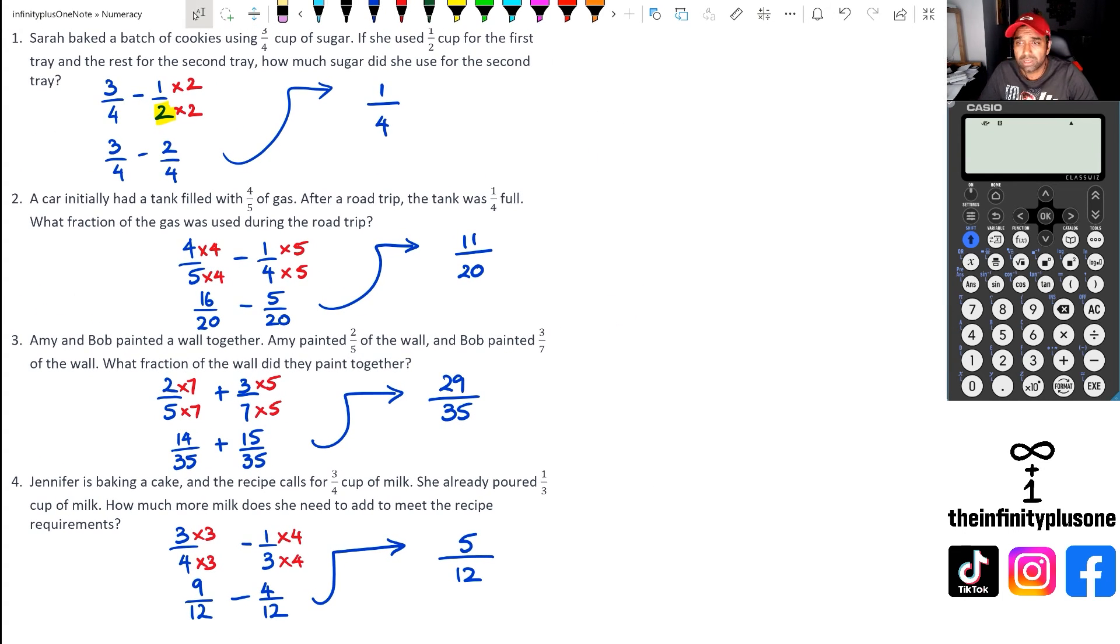Now, of course, you can actually do this with the calculator as well. And what we're going to do is just do a quick check. Because I know I made a mistake, I had to stop the video and rewind it and rerecord. But if we go 3/4 minus 1/2, that's a quarter, you know, we're pretty comfortable with that. Then we've got 4/5 take away 1/4, and that's giving us 11/20. Then we're looking at question three, which is 2/5 plus 3/7. And that's giving us 29/35. And finally, the last question is 3/4 take away 1/3, and there we go, 5/12.